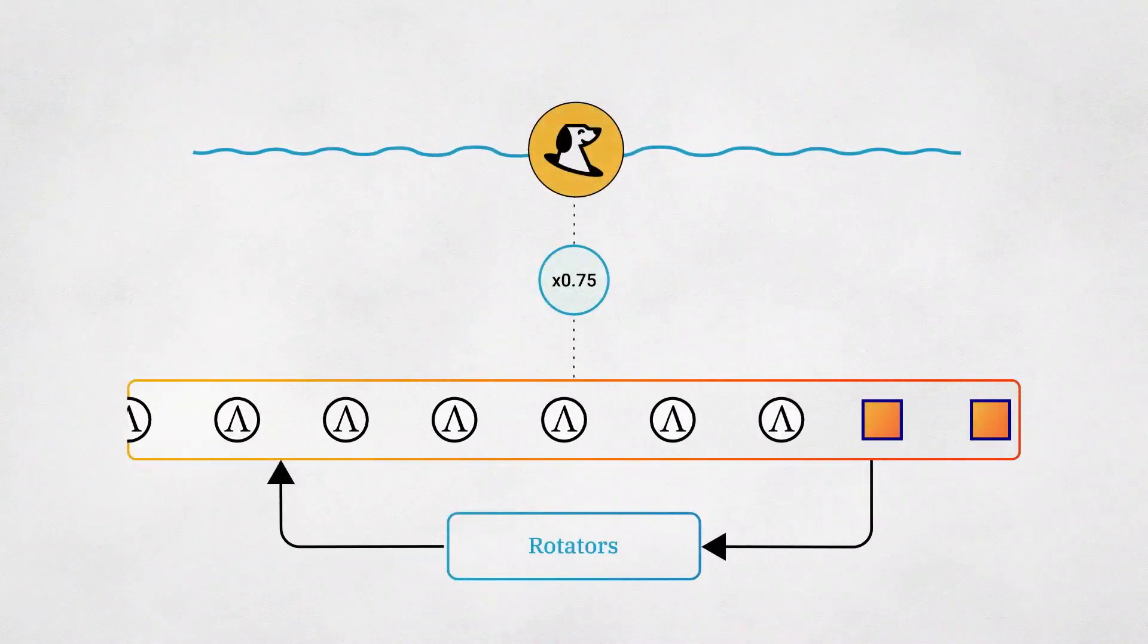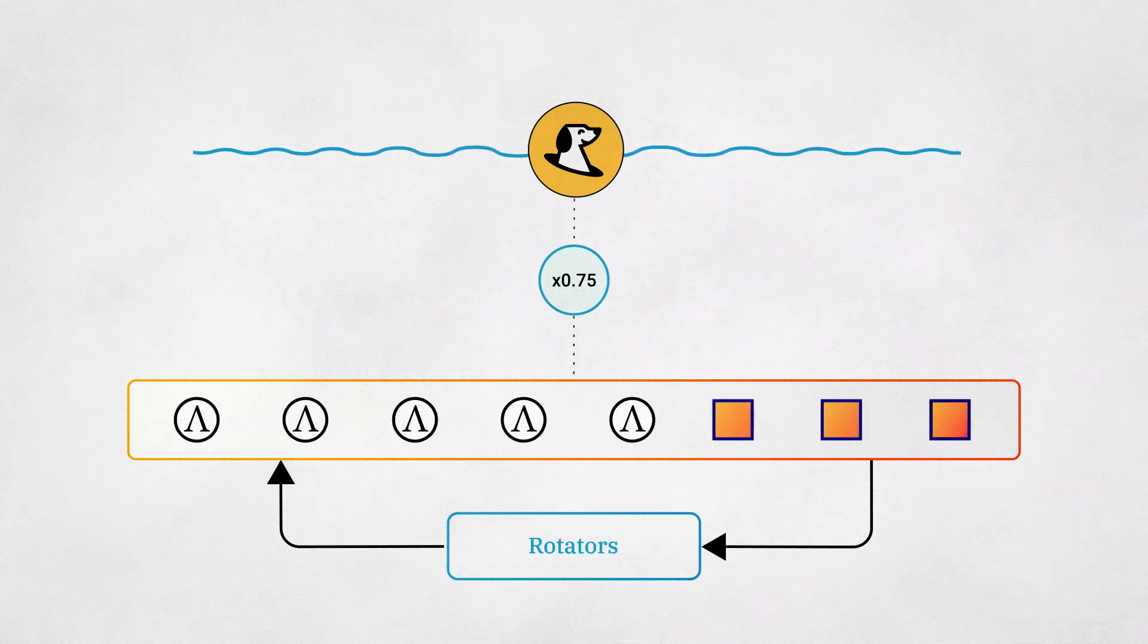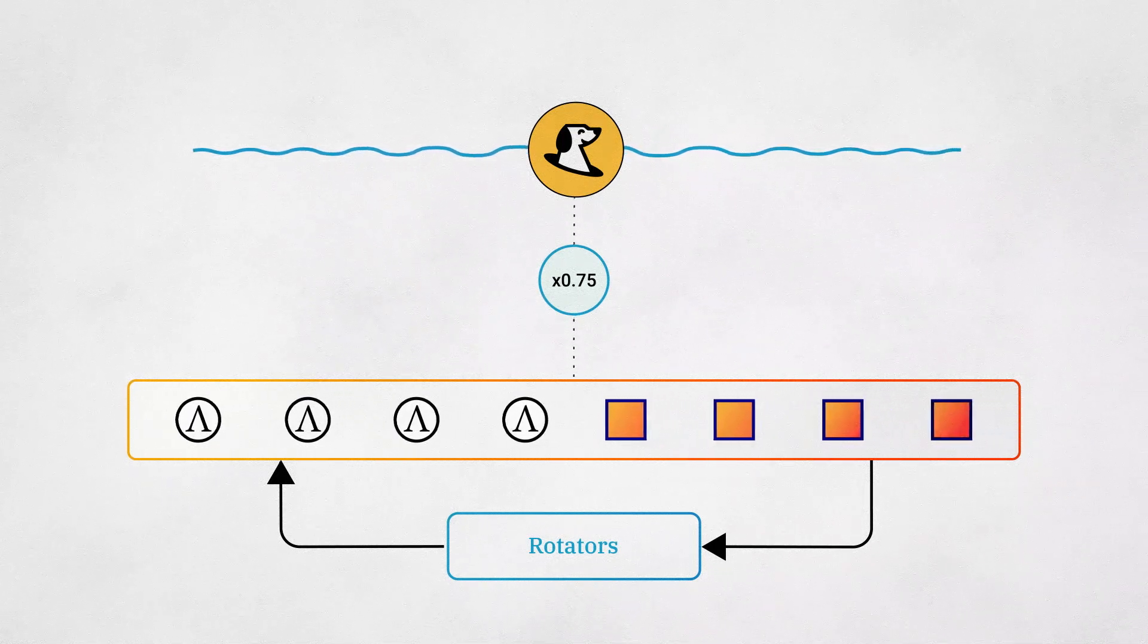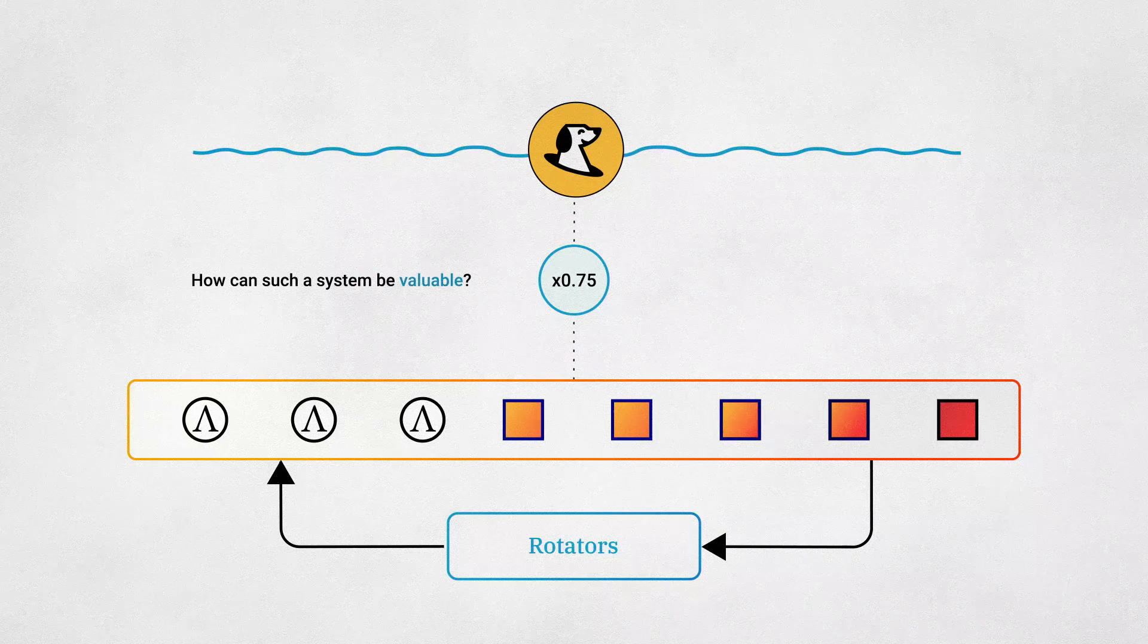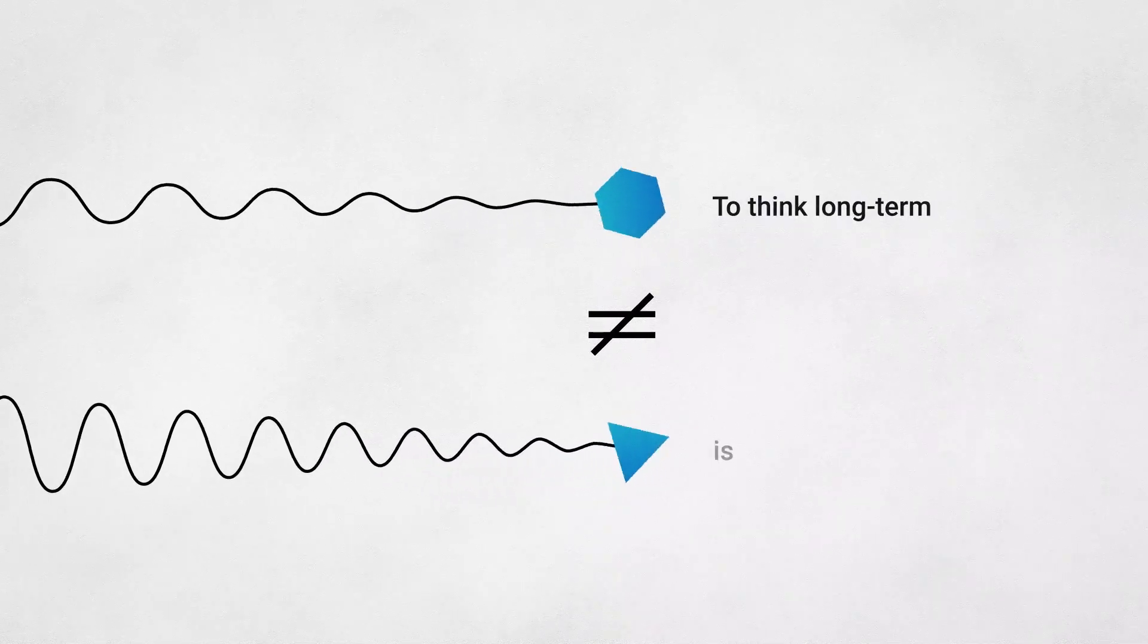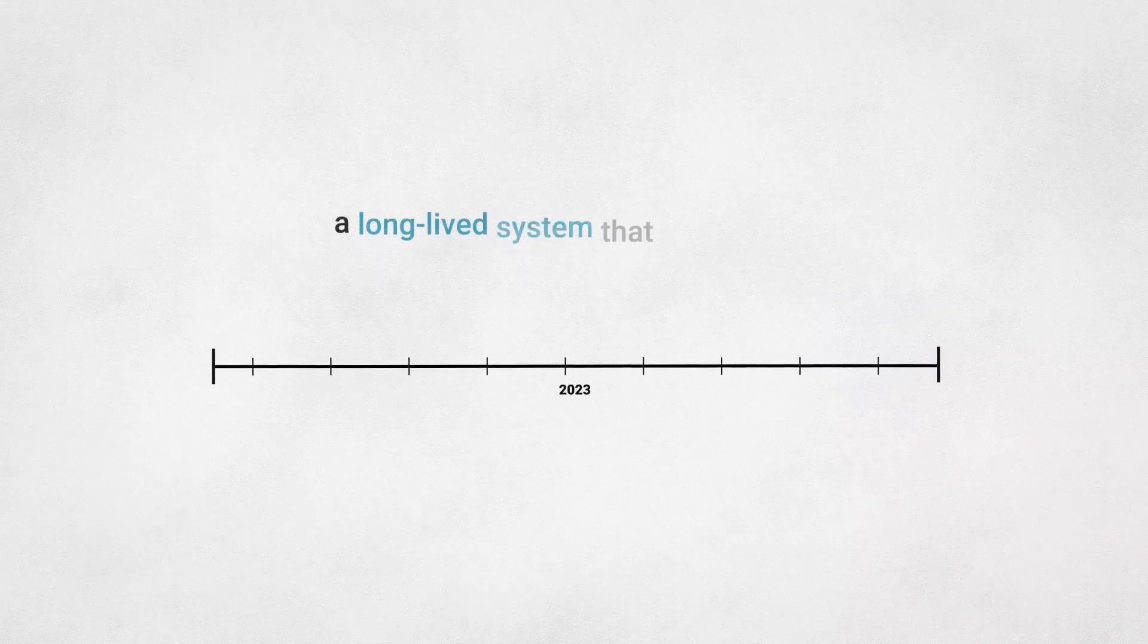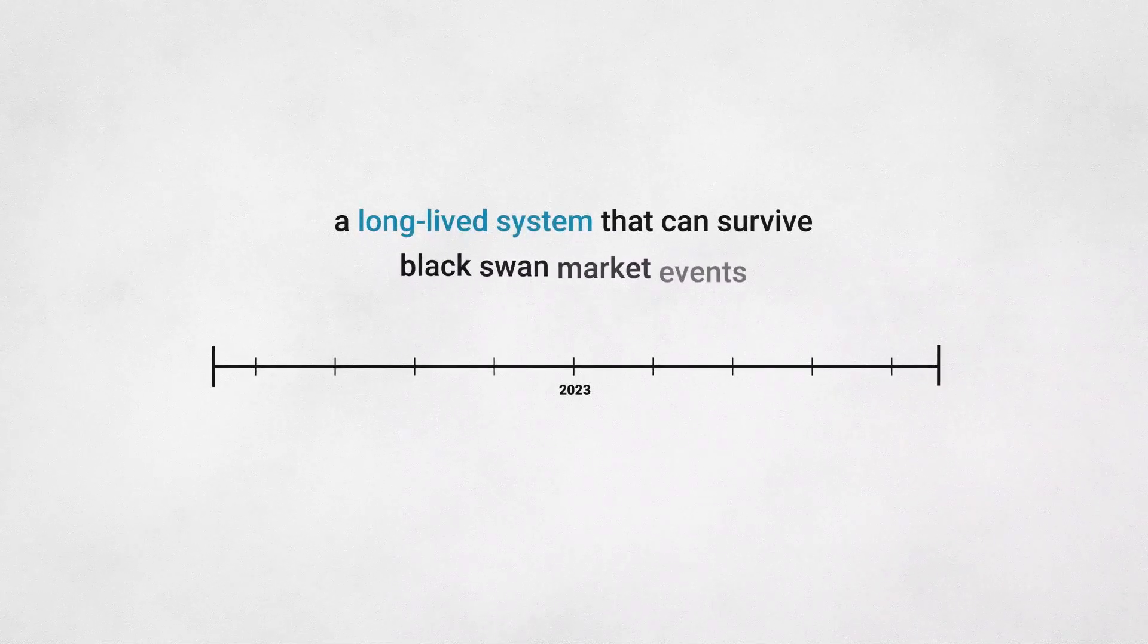If rotations can resume at a lower or higher price than they began at, then the system is not guaranteed to preserve stability at the same price forever. How can such a system be valuable? Recall that no synthetic asset can guarantee stability forever. To think long-term is to accept this fact and ask how one might design a long-lived system that can survive black swan market events.